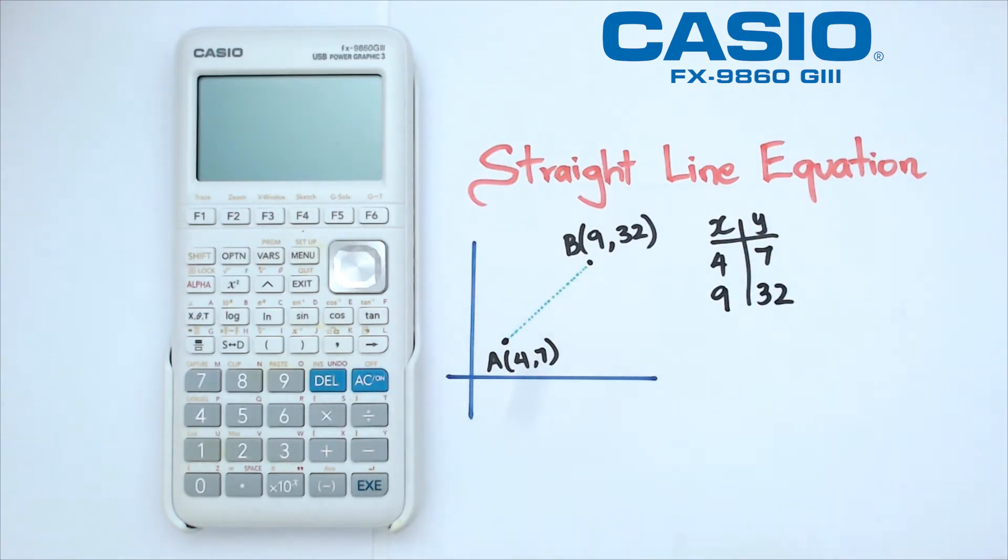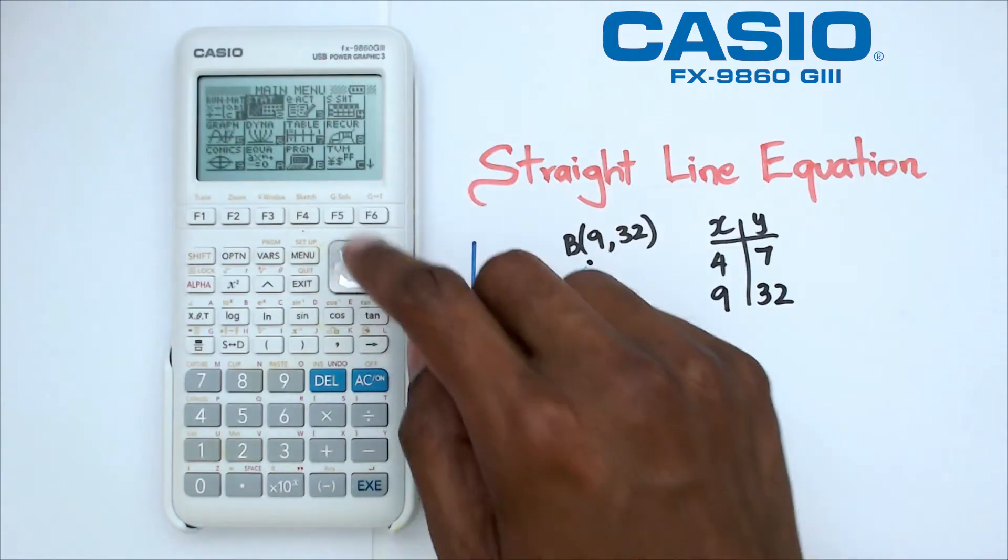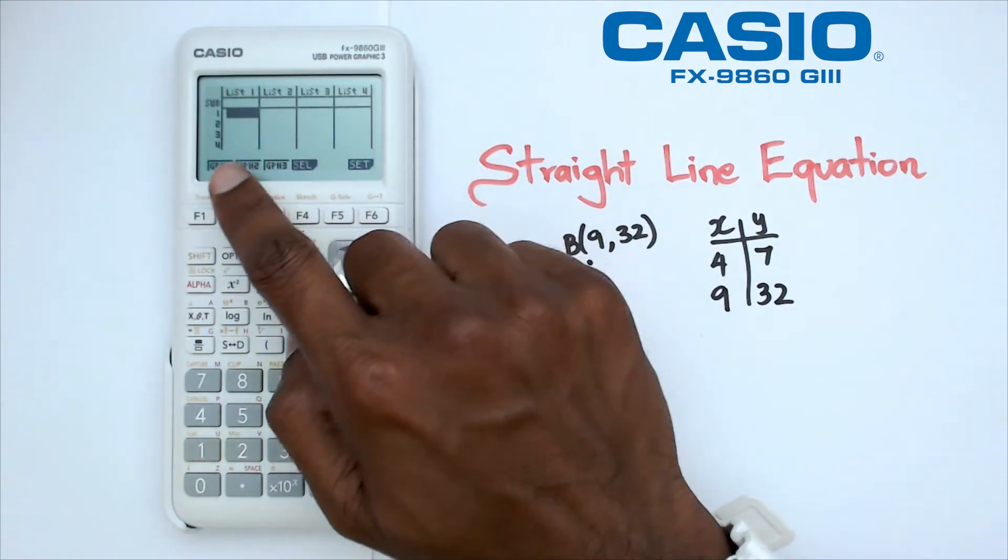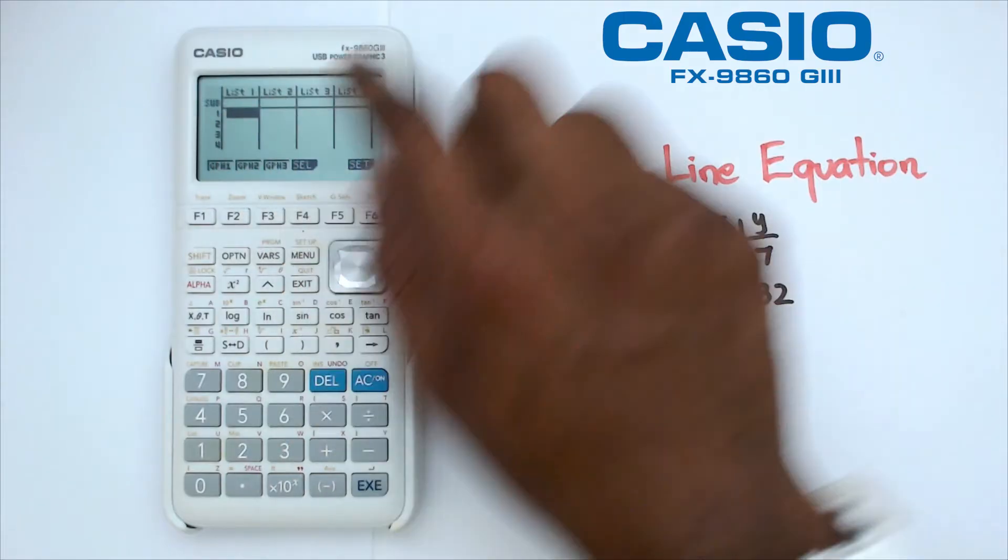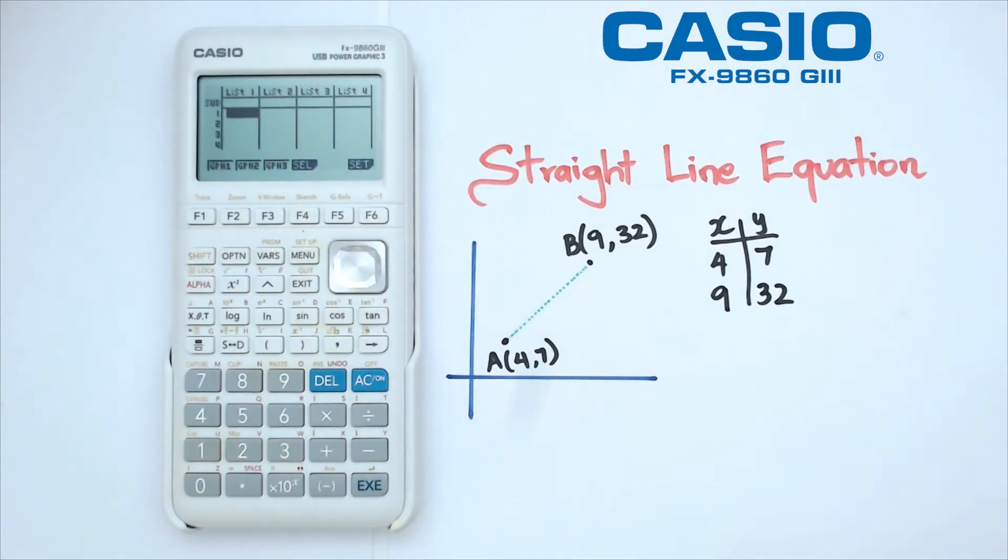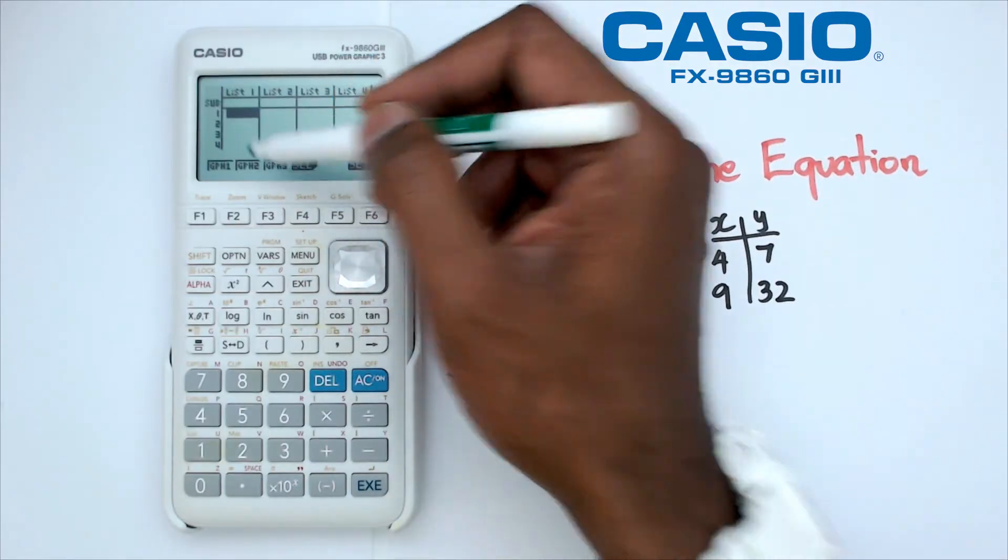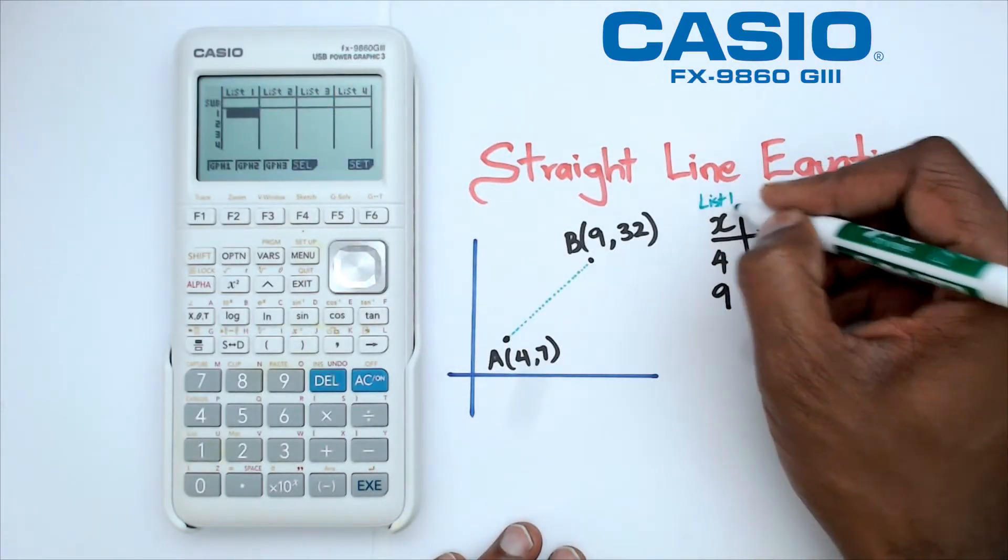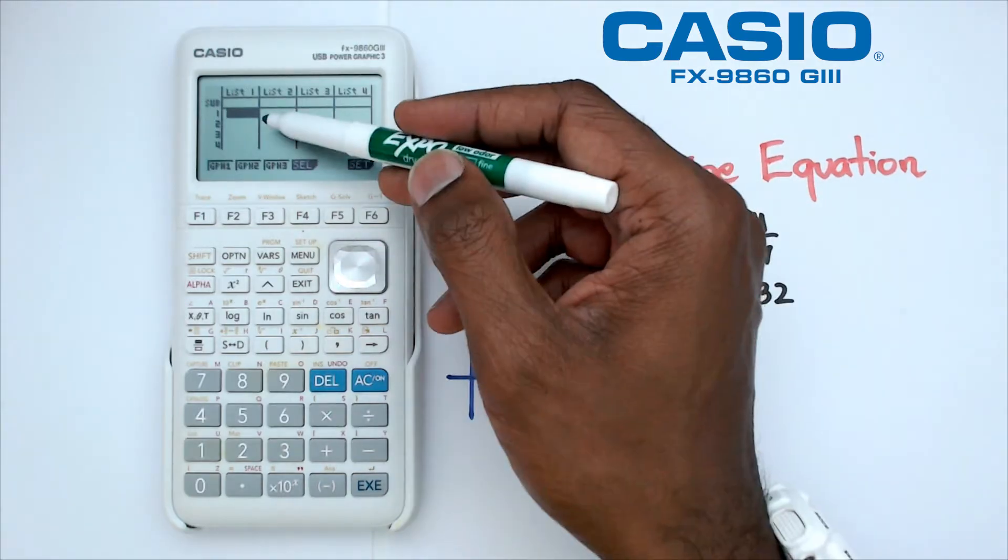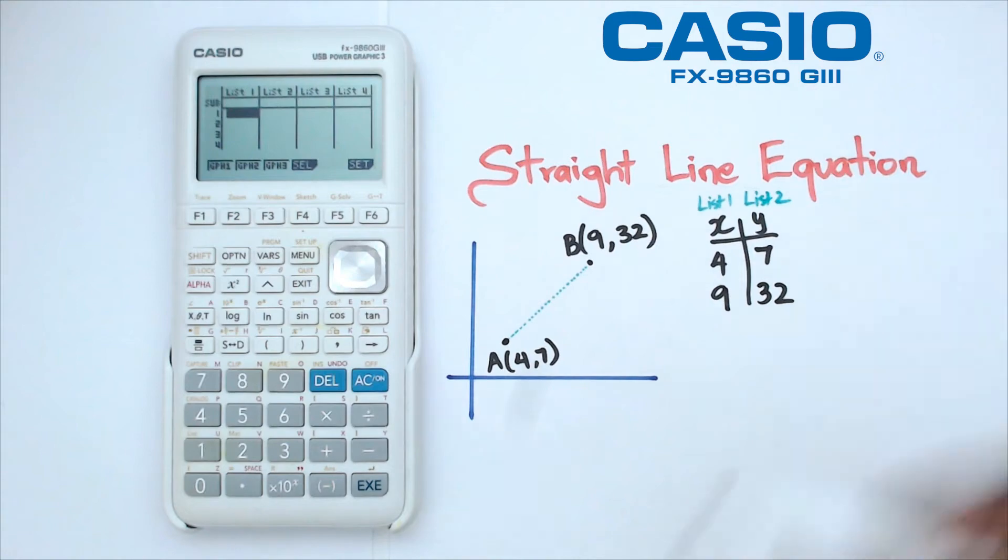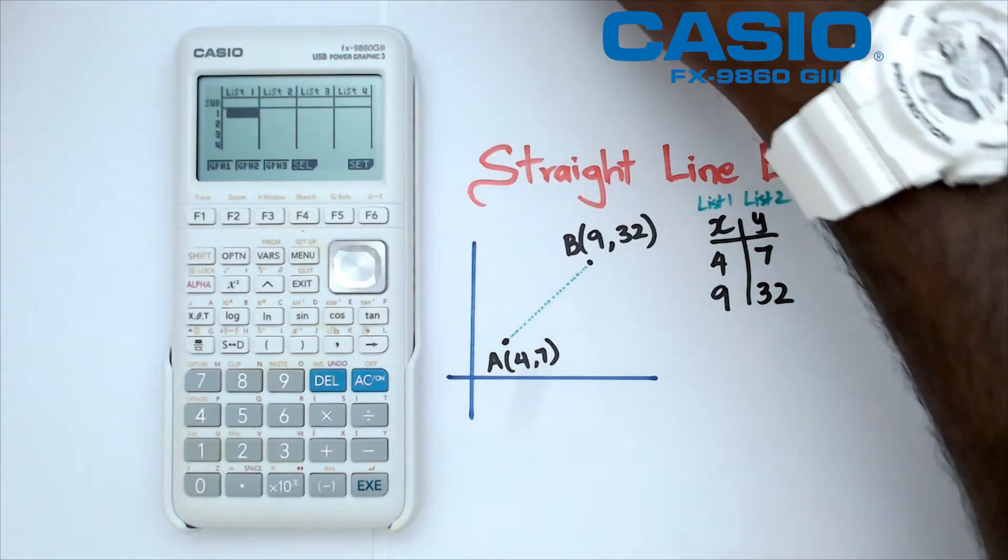Switch on your calculator and head over to the stat menu. Here you're going to see list 1 and list 2. What we're going to do is for all the X values we're going to put them in list 1, and then all the Y values we're going to put in list 2. Let's put the X values first.